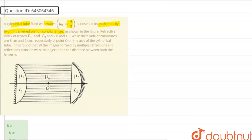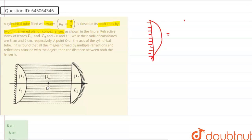Here we have our tube filled with water and two lenses closing both its sides. The first lens is a combination of a lens as well as a mirror, so lens-mirror equivalence would be applicable here. The light rays would first enter the lens, get refracted, then get reflected by the mirror, and then get refracted by the lens again — so this would overall act as a mirror.